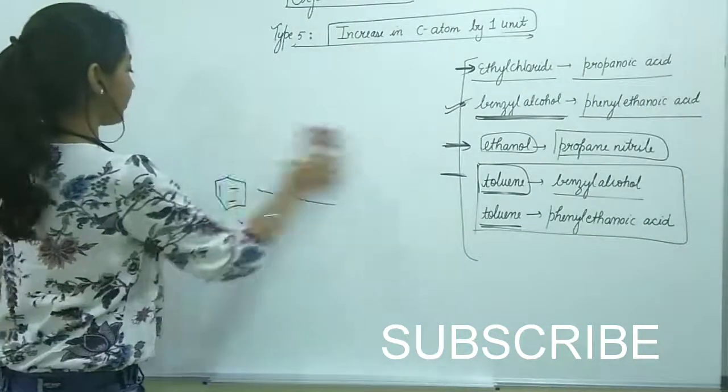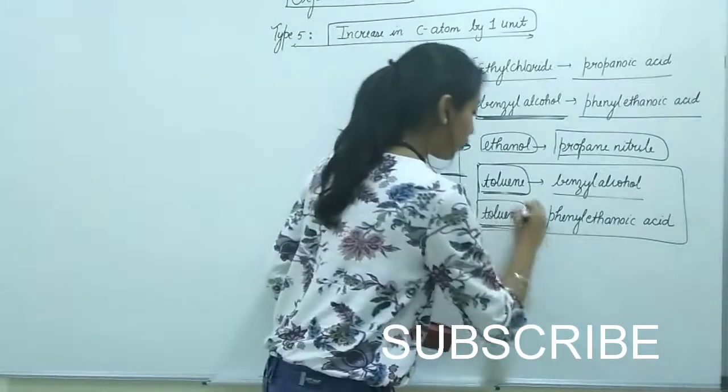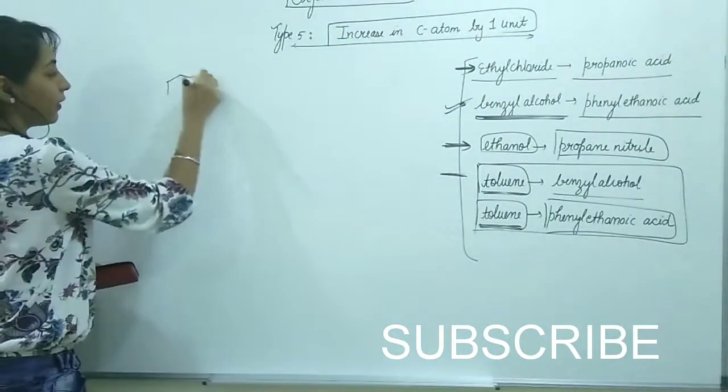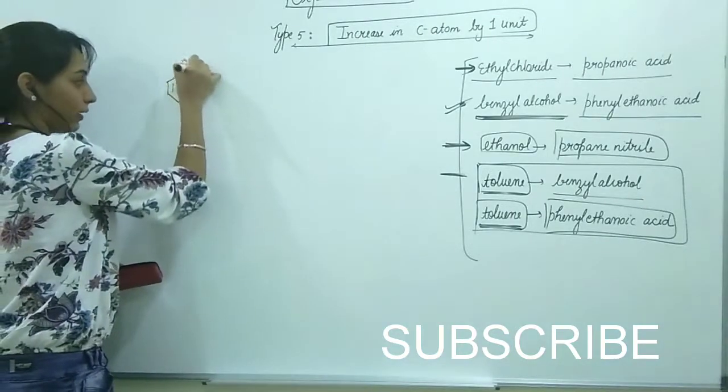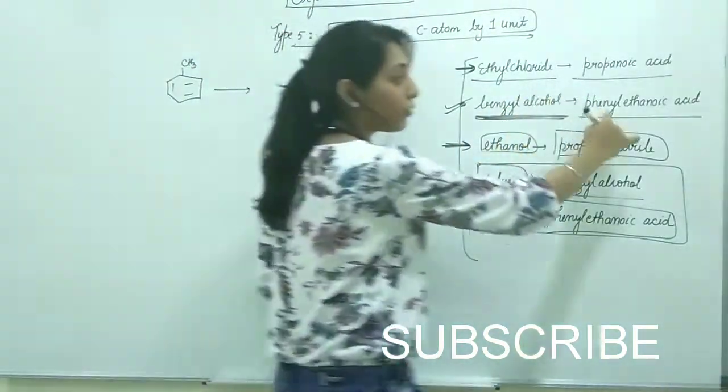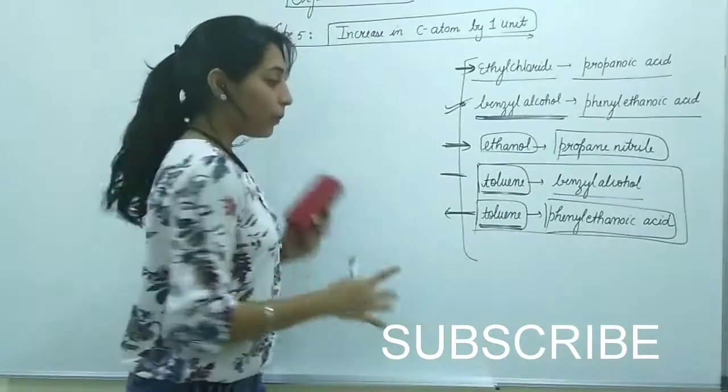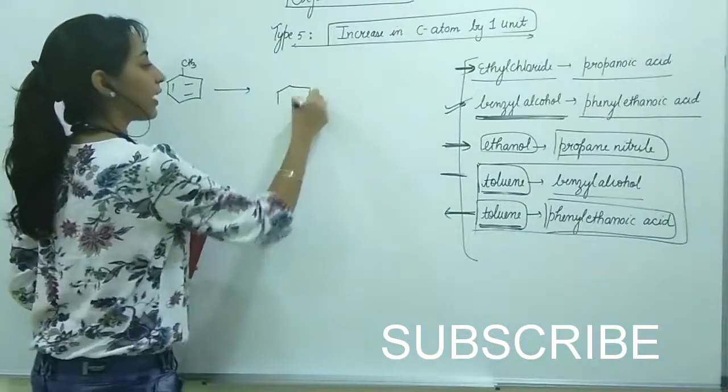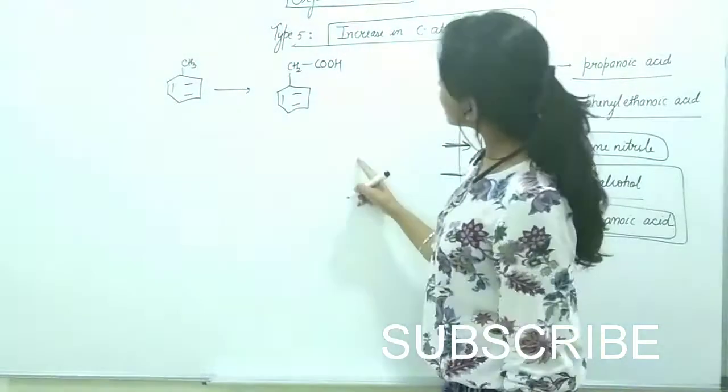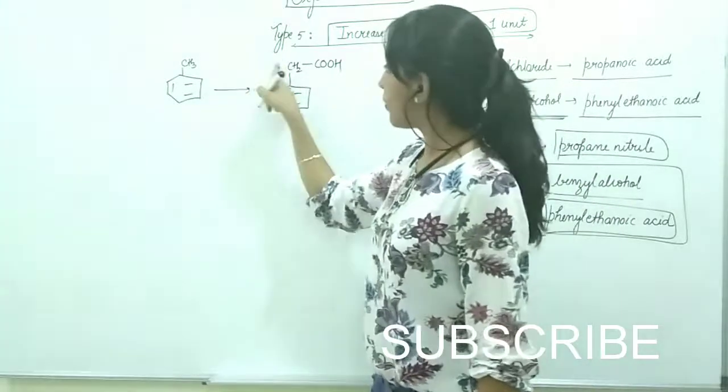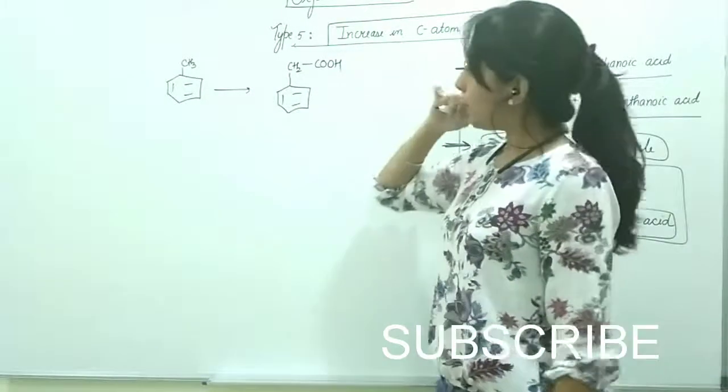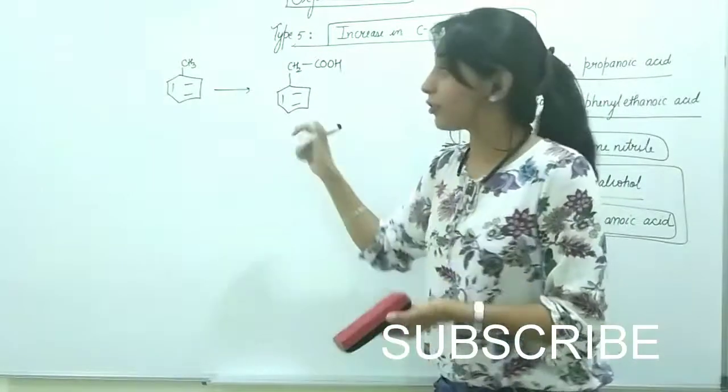The last question is how to convert toluene to phenylethanoic acid. This question isn't in NCERT but I thought it fits well. Phenylethanoic acid has one carbon, one benzene in both, but COOH is extra. To introduce one COOH, one carbon has to be introduced at the benzylic position. How? Simply add Cl2 in the presence of sunlight to get CH2Cl.